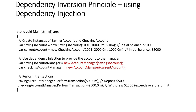In the main method, the first two lines initialize the lower-level modules, each with their own implementations of withdraw and deposit. Dependency injection is then used to provide the account to the account manager. Finally, they're able to perform transactions. The perform transaction method is much more simplified because of loose coupling, as opposed to the tight coupling that existed before the Dependency Inversion Principle was applied.